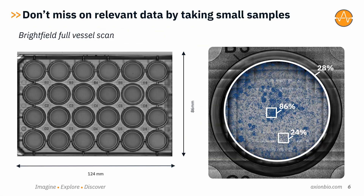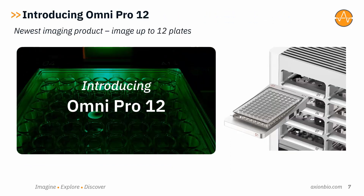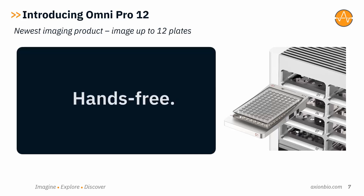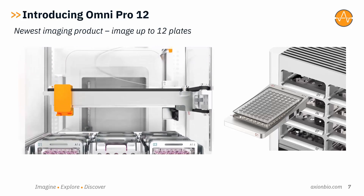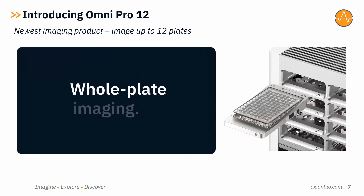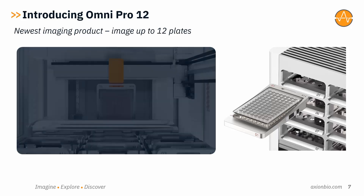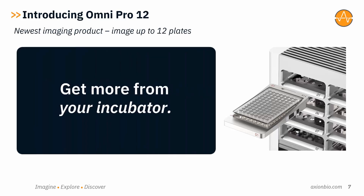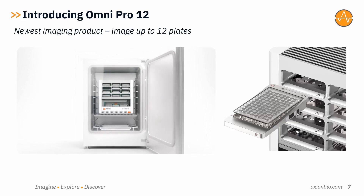Why image the entire culture surface? When you do, you get a more accurate understanding of your cell culture. Here you can see the differences in cell coverage if you focus on just a small sample area versus the whole well. In 2023 we launched a new 12-plate version of the Omni system called the Omni Pro 12. It has a robotic arm to shuttle the plates down onto the imaging surface and back into the plate hotel, and the experimental scheduler automates this process, reducing the time you need to spend monitoring your cell cultures.